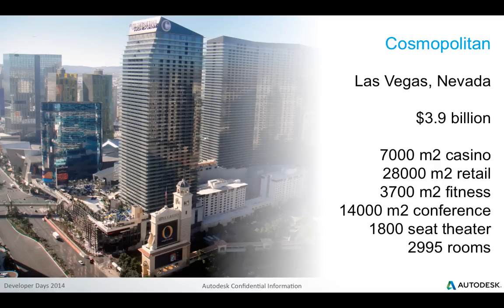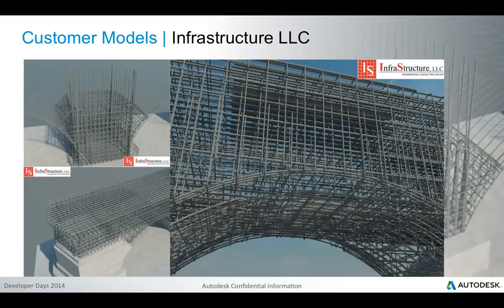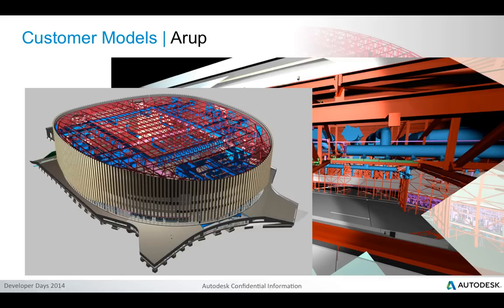The most important thing to note is that Revit is being used for absolutely gigantic projects with multidisciplinary teams distributed across the entire planet. We see Revit being used for steel detailing including all the nuts and bolts. Here is an arena in Leeds — a multidisciplinary project with architecture, MEP, structural engineering and structural analysis integrated.